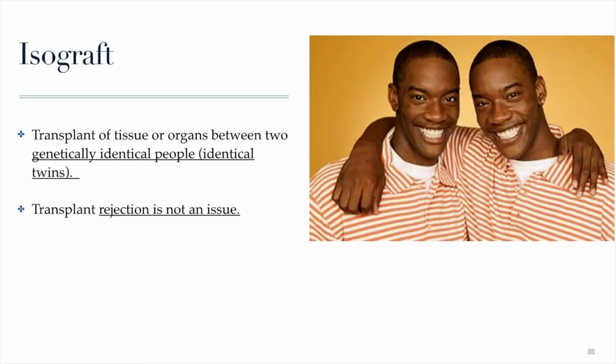The next type of transplant, which is not very common, is called isografts. Isografts can only happen with identical twins — it is a transplant of tissue or organ between two genetically identical individuals. In this case, even though the transplant happens between two different people, there is absolutely no chance of rejection because identical twins have the exact same tissue type.